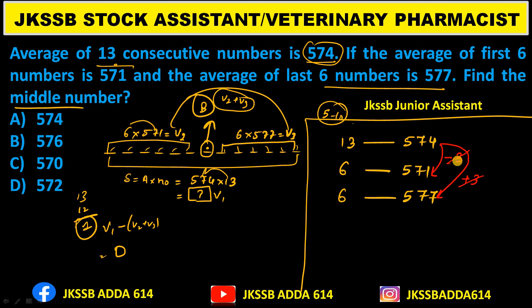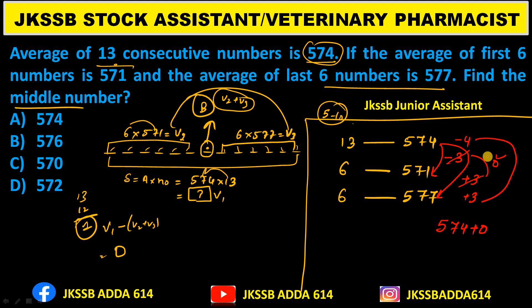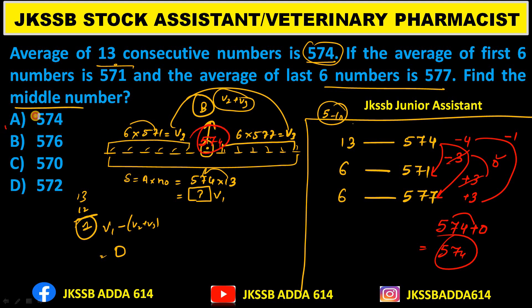We add these two differences: minus 3 and plus 3 = 0. The middle number = original average plus this value = 574 plus 0 = 574. If the values were, say, minus 4 and plus 3, the answer would be 574 minus 1 = 573. So the final answer here is 574, option number A.